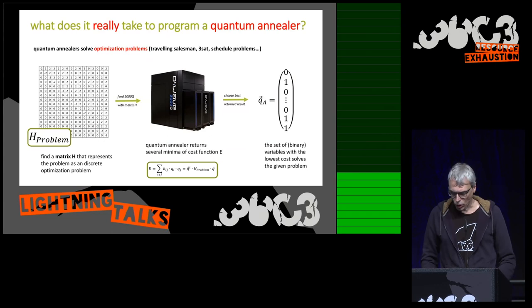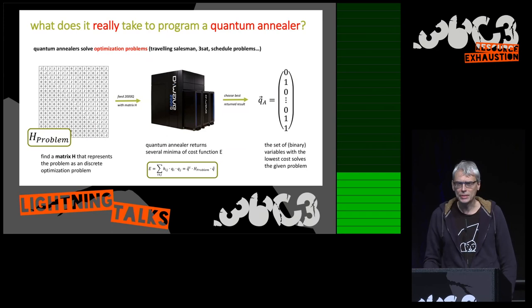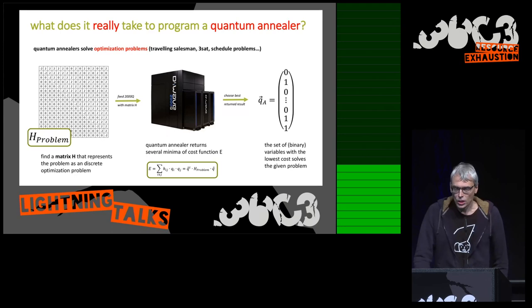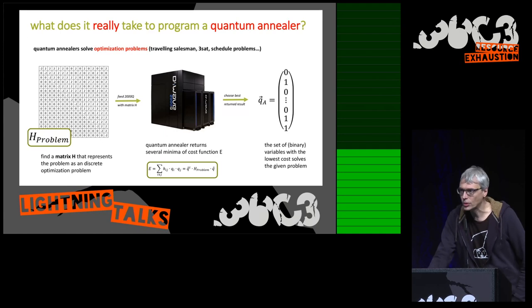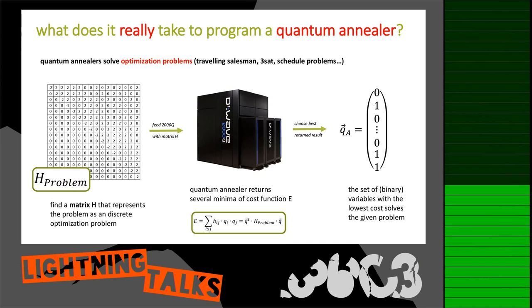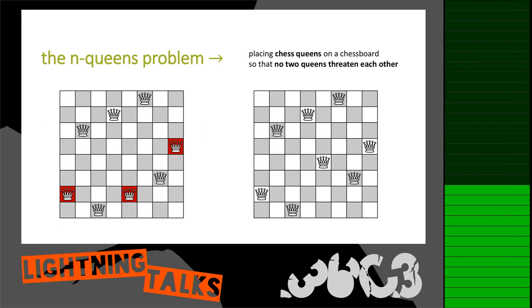All you have to do is find a cost function for a given problem. Quantum annealers solve optimization problems like the travelling salesman or scheduling problems. Once you have a cost function that evaluates your problem, you create a matrix from it, feed it to the D-Wave quantum annealer, and the machine returns several solutions. You pick the ones with the lowest cost. I'll explain this on the concrete example my students worked on: the N-Queens problem.